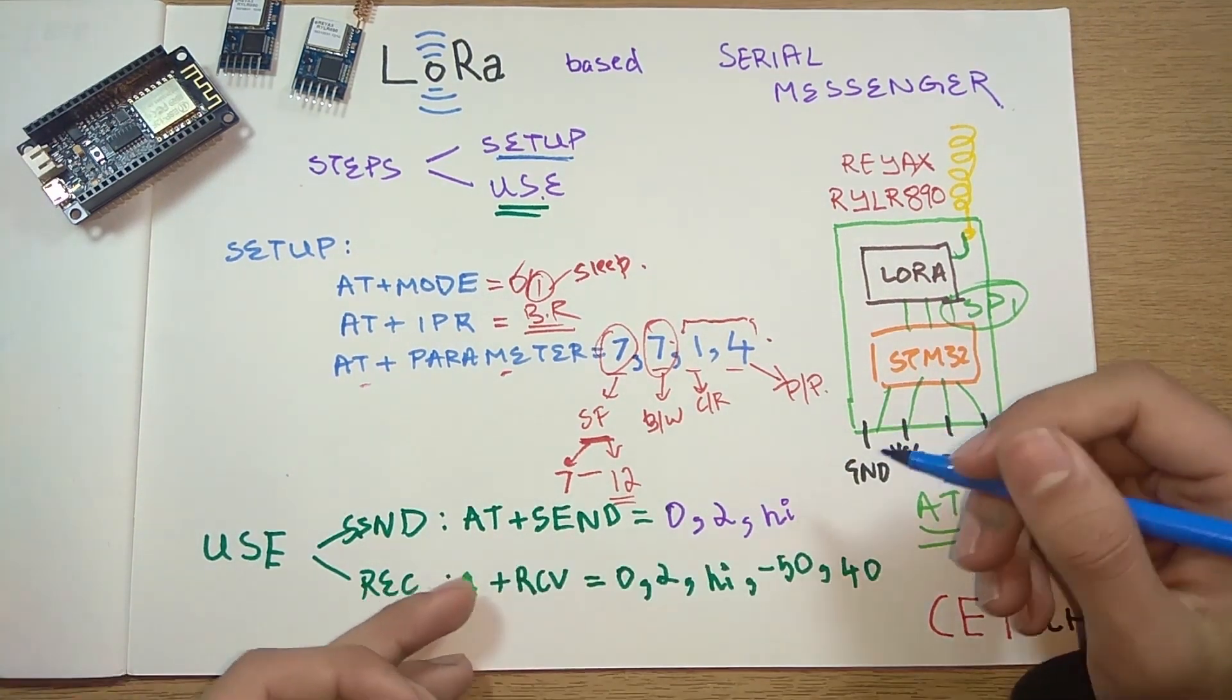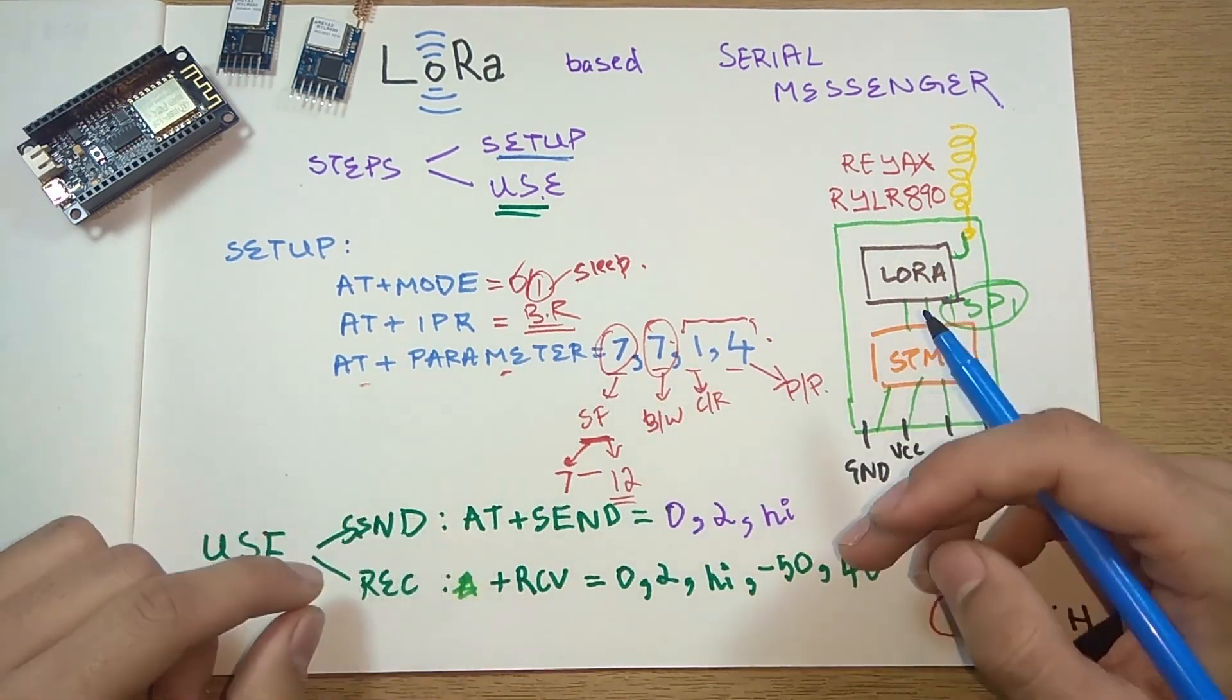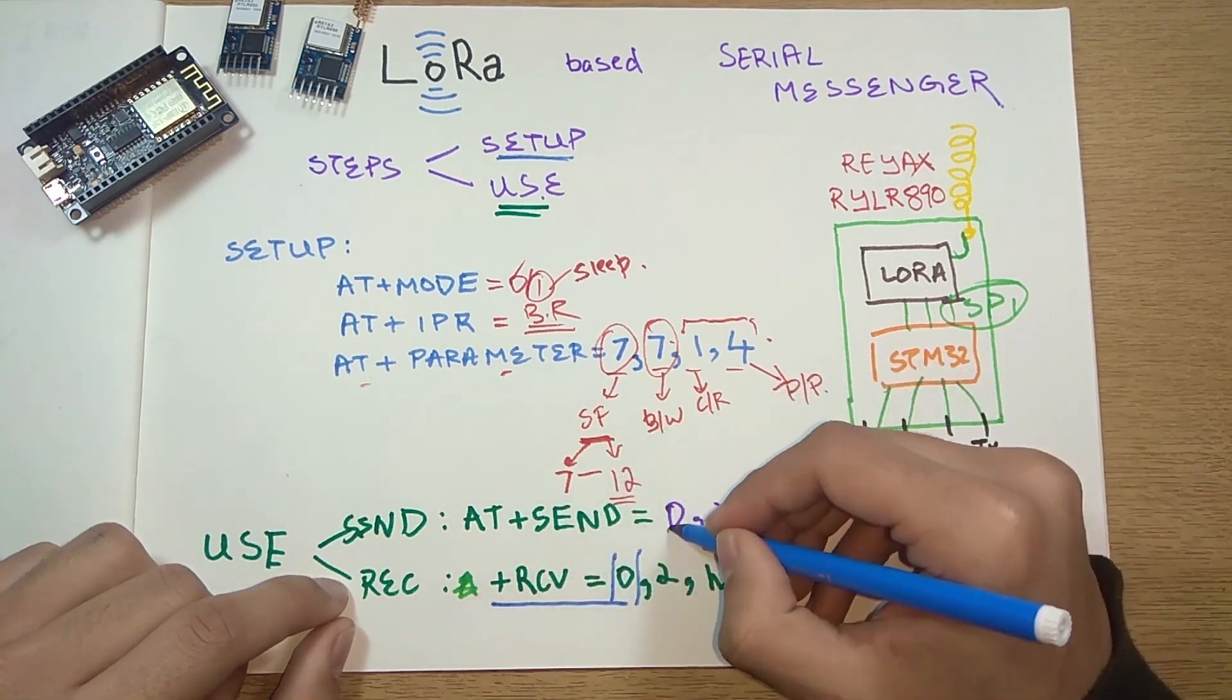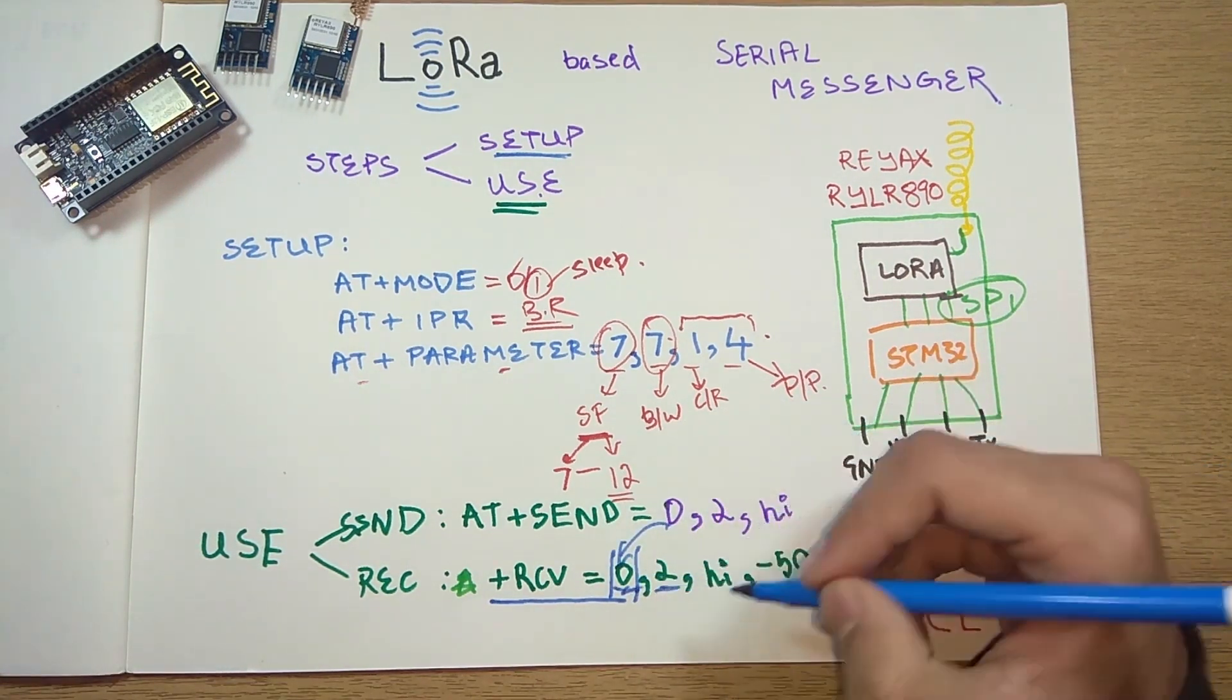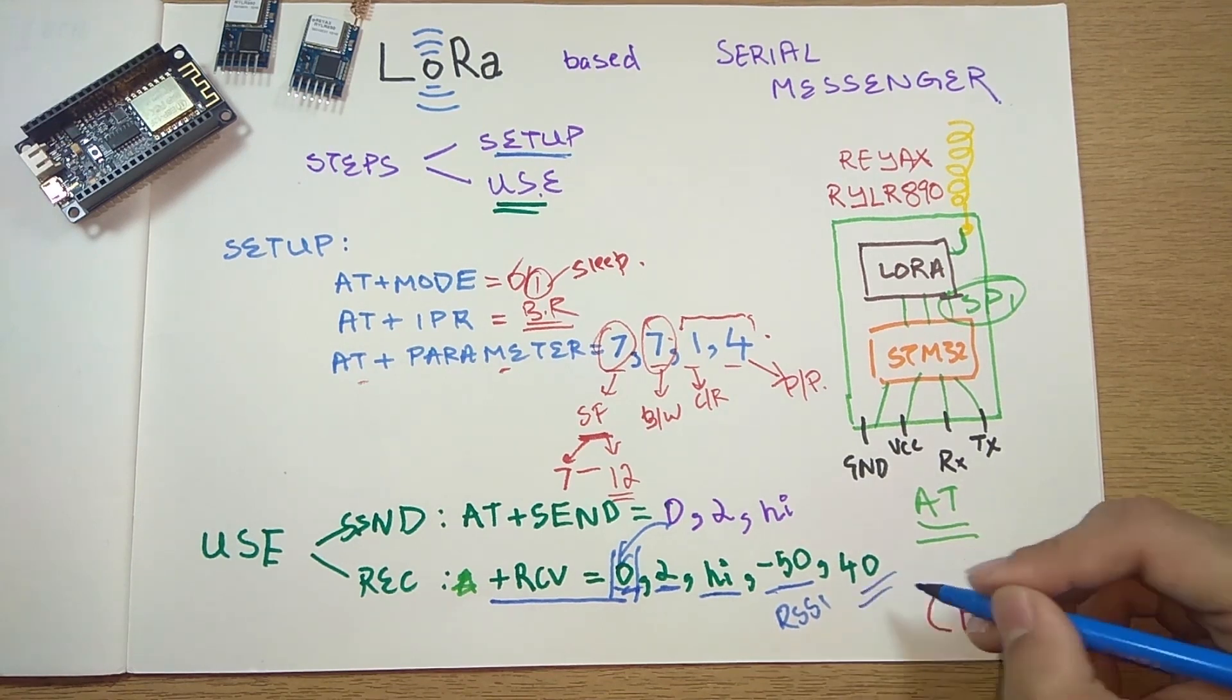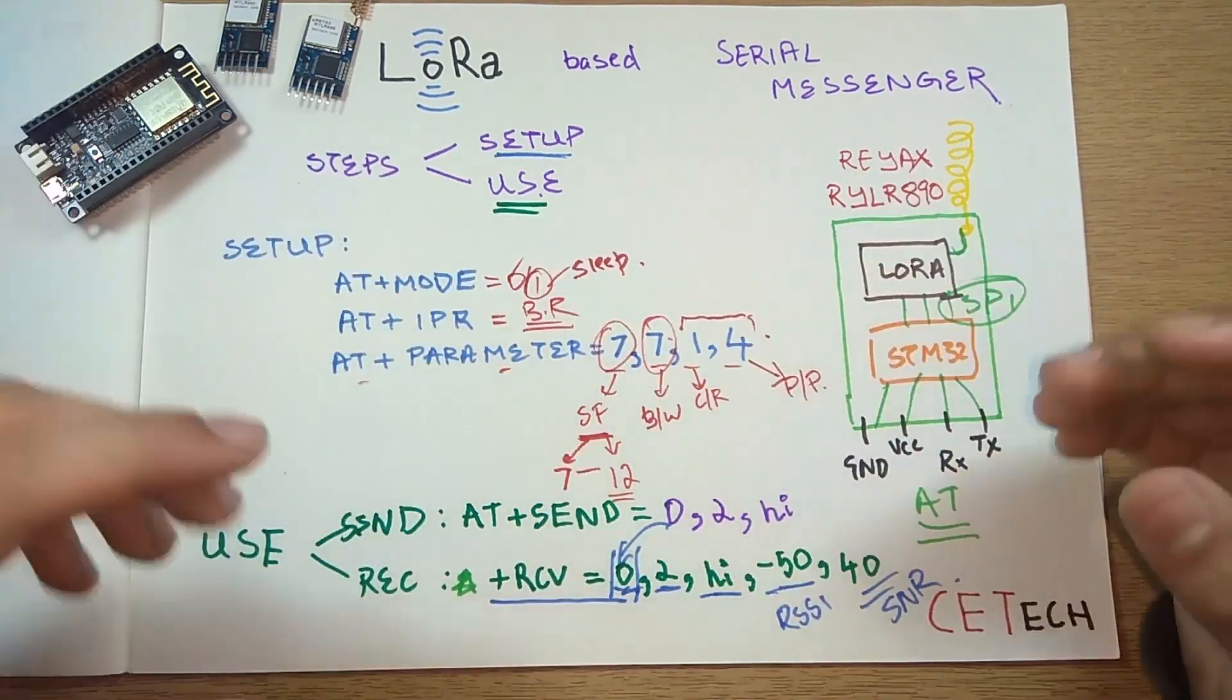Now moving to the receiving part. Obviously while receiving, you don't have to enter any AT commands. This type of command or message will appear automatically on your serial monitor. First it will be +RECEIVE=, then this will show what channel, what address we got the message at, then the payload length, then the message, then this will be RSSI (signal strength basically), and this is the signal-to-noise ratio. We'll use all of this knowledge to make a simple code so we can communicate using serial monitor.